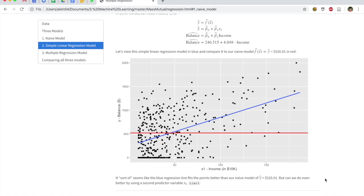So now recall, we have the naive model in red, which was $520.01. But the blue line represents the simple linear regression line where we now take into account income. Notice how it sort of dances around that red line.